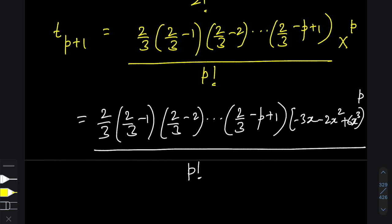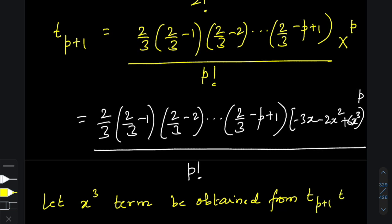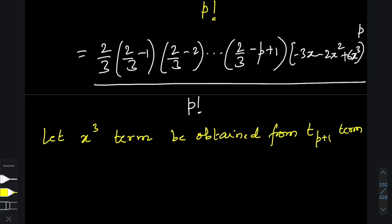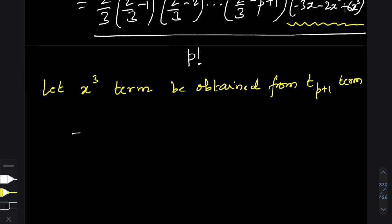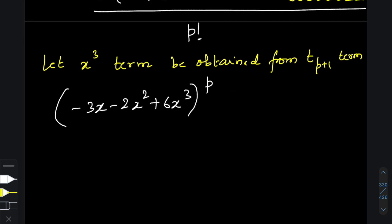What I'm claiming is that this (p+1)th term is responsible for giving me the x³ contribution. Let's now focus on the inner part: (−3x − 2x² + 6x³) to the power of p. Let's write the general term for this expression using the multinomial theorem.